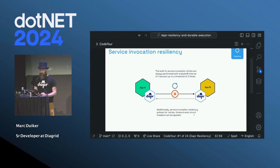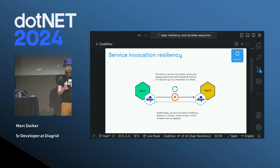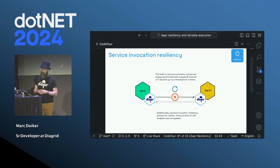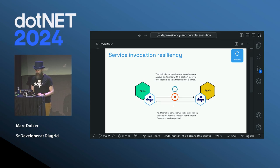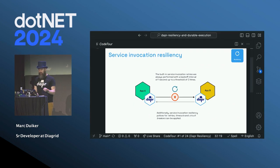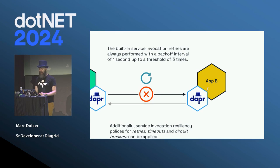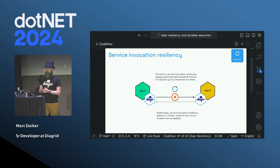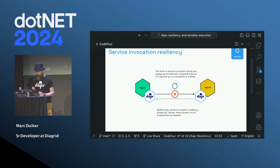Dapr comes with built-in resiliency policies. There are default settings that are ideal for service-to-service invocation, and they also apply when communicating with a state store or message broker. When your application wants to make a service call from application A to application B, you call the Dapr sidecar, which finds the other application, forwards the request through the other Dapr sidecar, and returns the response. The Dapr runtime will take care of retrying this call if application B is not running.